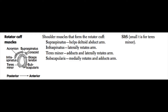Next we have infraspinatus, which laterally rotates the arm, and teres minor, which also laterally rotates the arm. They have very similar function. Teres minor also has a little bit of adduction of the arm, but both infraspinatus and teres minor are primarily lateral rotators. Then lastly, we have subscapularis, which medially rotates the arm and also does some adduction.